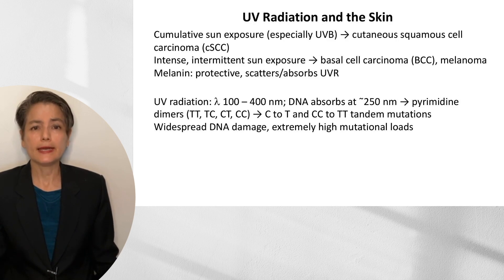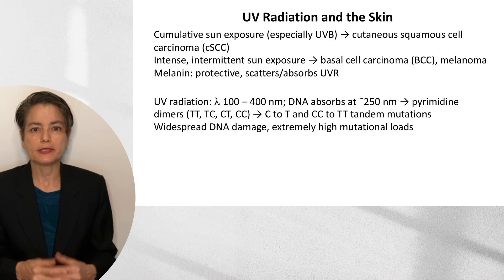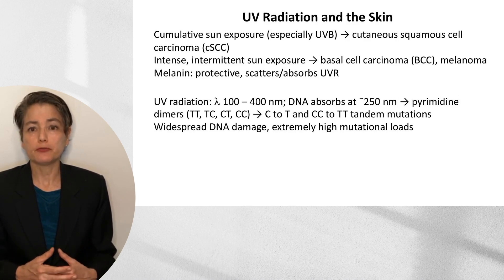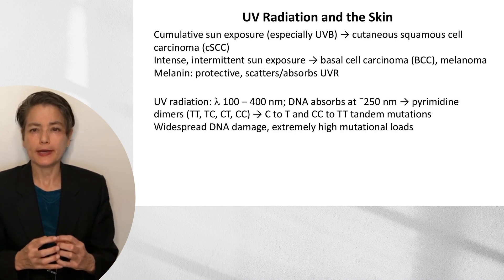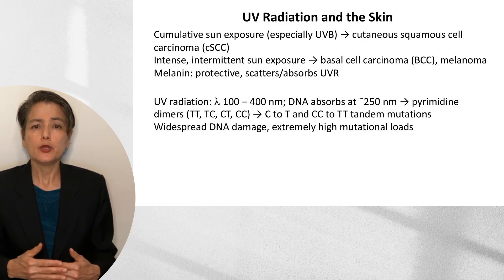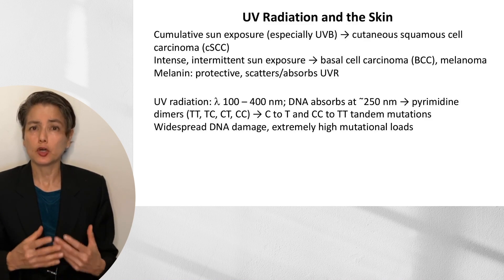Melanin is protective because it can scatter UV radiation and absorb its energy. UV radiation ranges in wavelength from about 100 to 400 nanometers, and the peak absorption for DNA is at about 250 nanometers — right in that sweet spot. When DNA absorbs that energy, it can cause pyrimidine dimers. Pyrimidines are thymine and cytosine, and if you have two adjacent pyrimidines on the backbone, you can get formation of a dimer. Nucleotide excision repair is needed to correct that lesion.